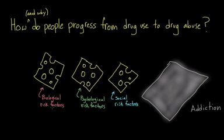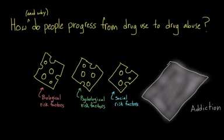There are many different types of risk factors for substance abuse, and we can think about these as different slices of Swiss cheese. Let's say we have three slices: each represents a different kind of risk factor. We have biological risk factors like genetics, psychological risk factors such as certain personality factors correlated with addiction, and social risk factors like having friends who use substances. These slices are different for each individual person — they might have more holes in one and fewer in another — but everyone has some unique combination of risk factors.